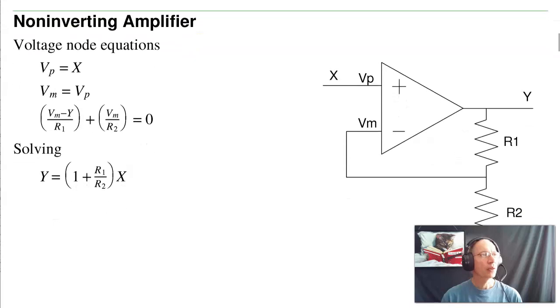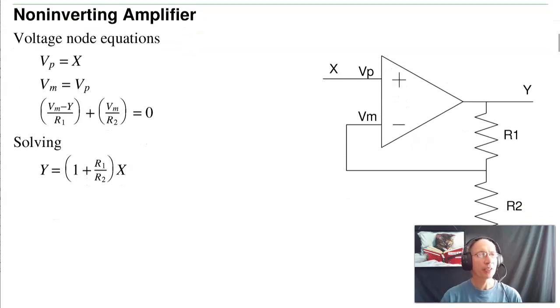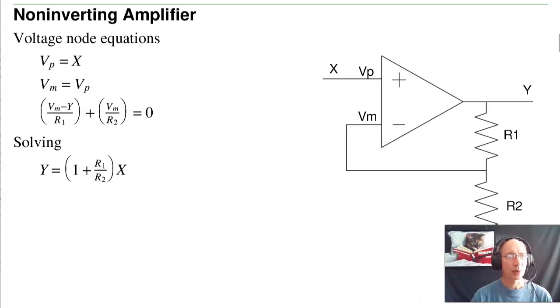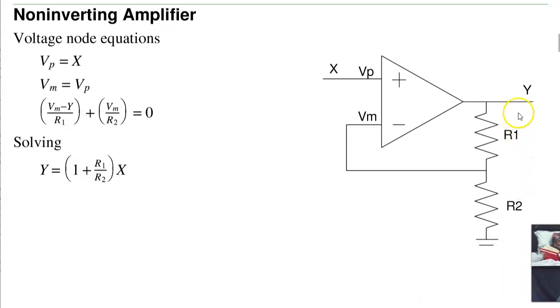Now, the first amplifier we'll look at is the non-inverting amplifier. This has a gain of 1 plus the ratio R1 over R2. And you can see that for the circuit, write the node equations. This is Vp equals X, V minus equals Vp, and then V minus minus Y over R1 plus V minus over R2 equals 0.